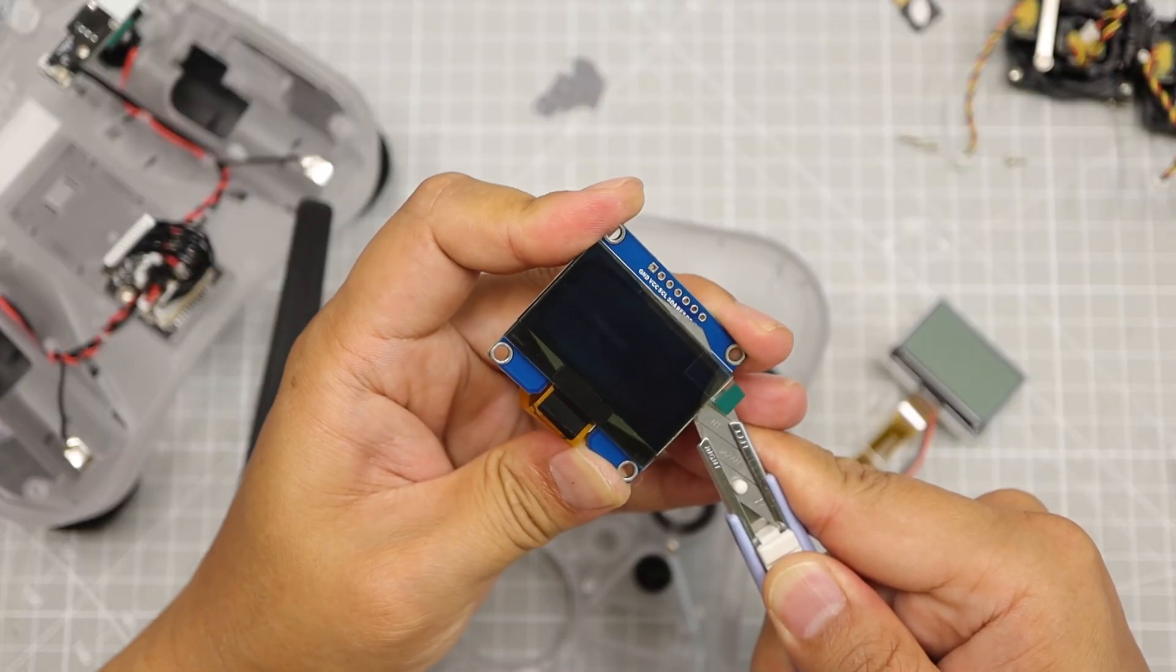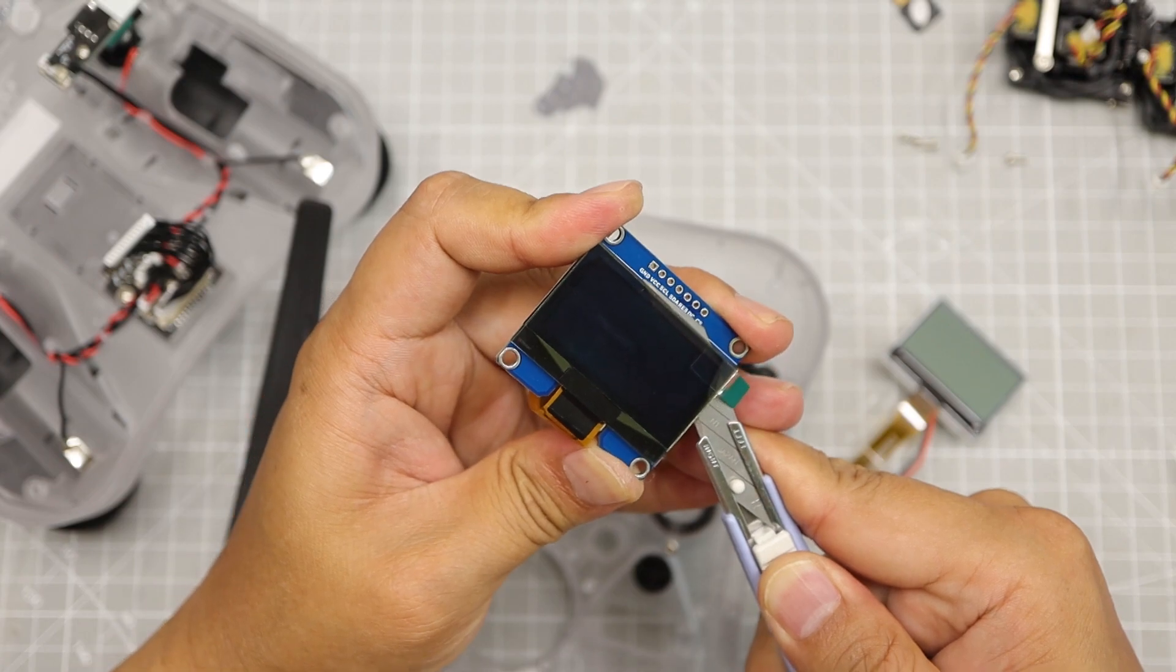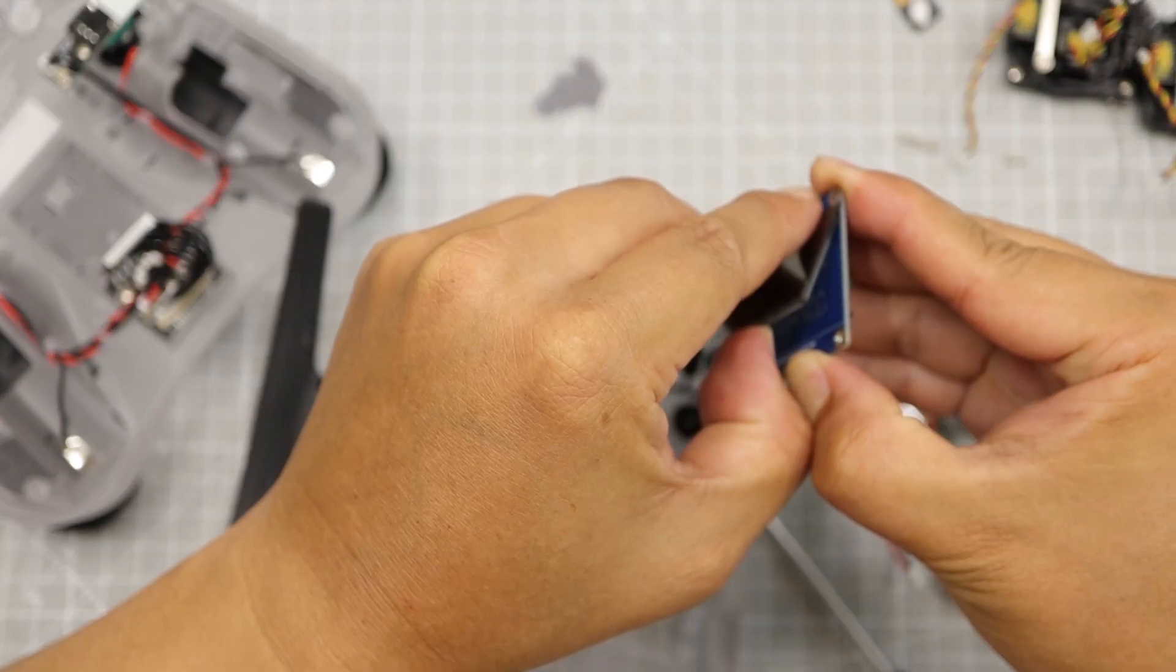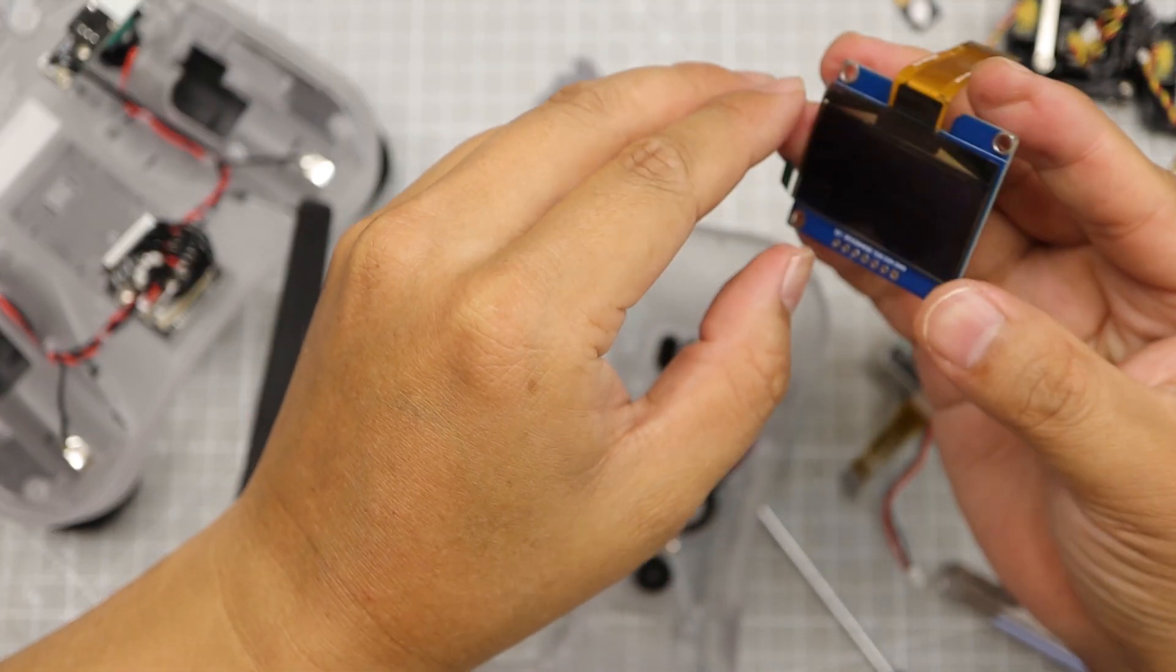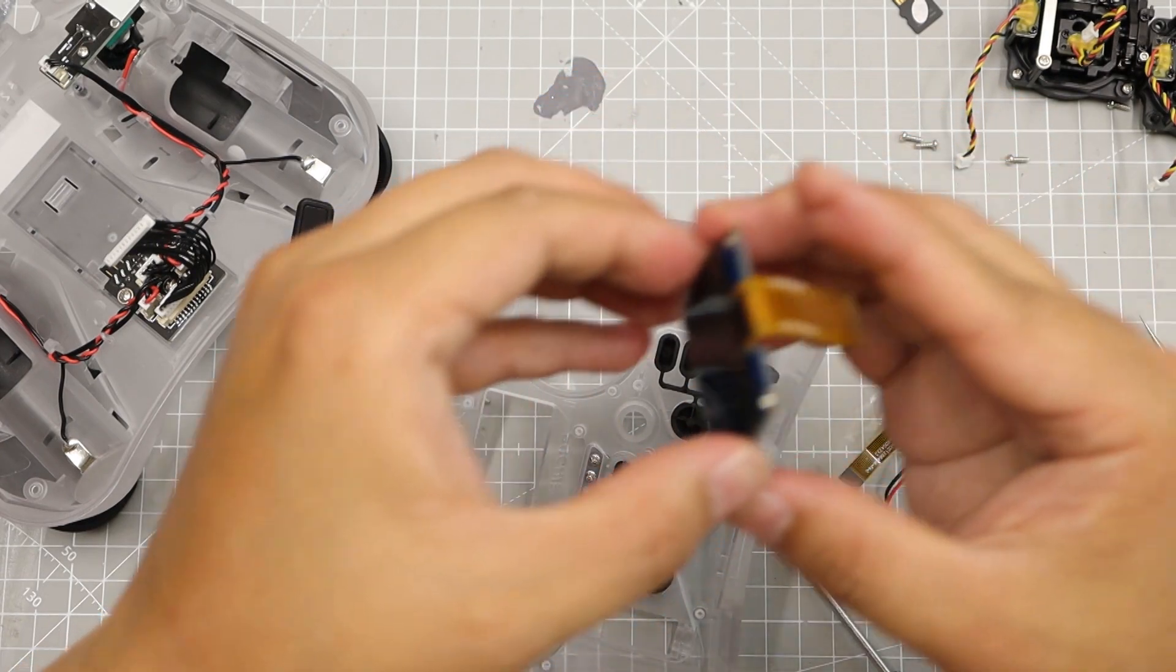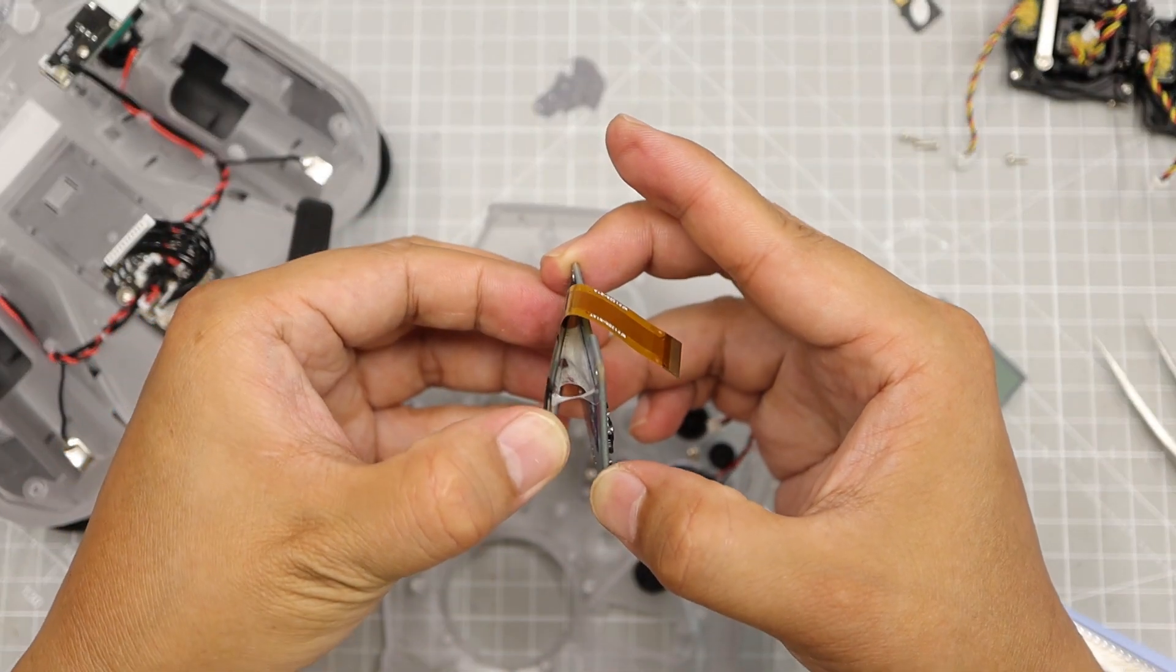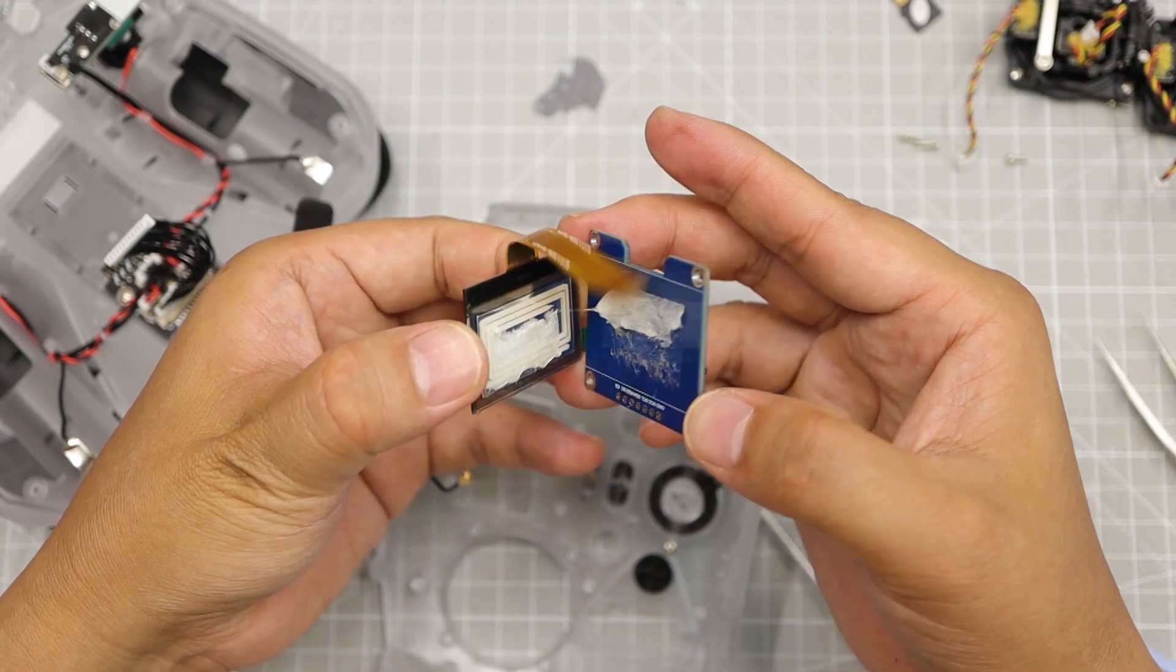First, due to tight room for install, detach OLED glass and PCB. Very gently separate OLED glass and PCB. OLED glass is very fragile at each corner. Take care.